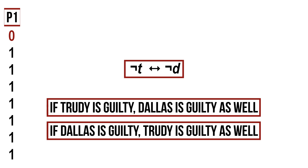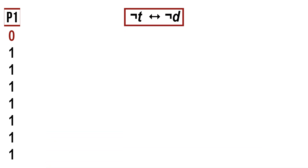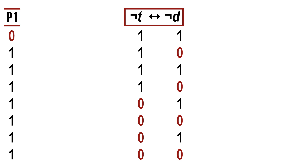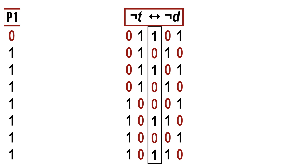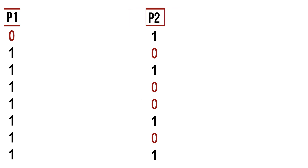We are now going to evaluate in which situations this second premise is true. We assign truth values to the atomic propositions in the same order as with premise one, so they form part of the same truth table. We then evaluate not t and not d, and finally the full formula under the biconditional as the main connective. We put the second premise aside next to the first.